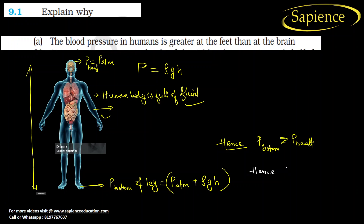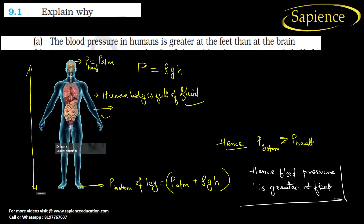So P_bottom is greater than P_head. Hence, blood pressure in a human is greater at the feet. I hope you have understood this.